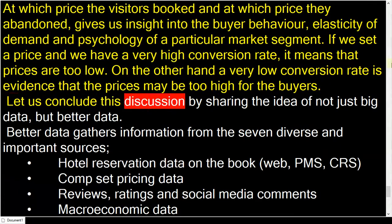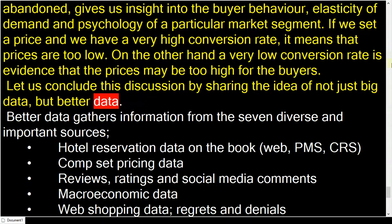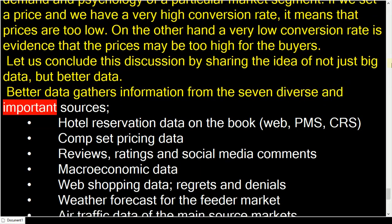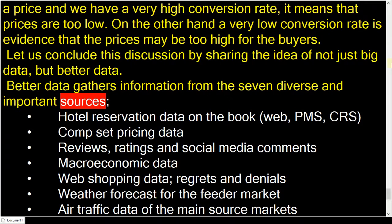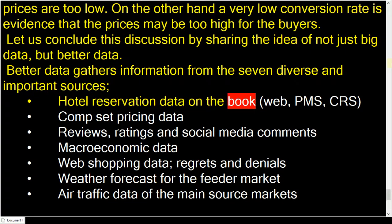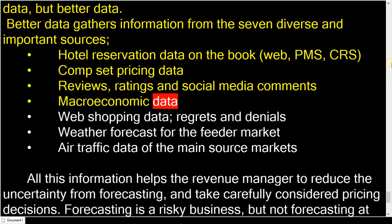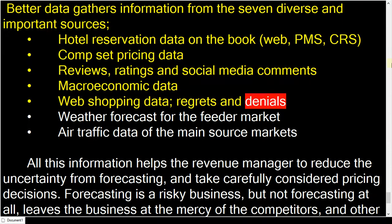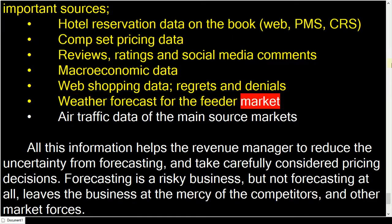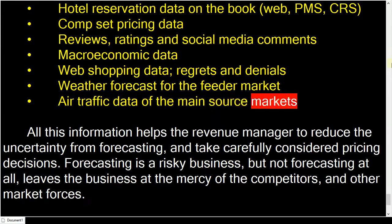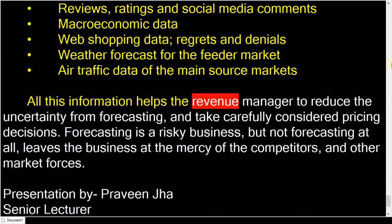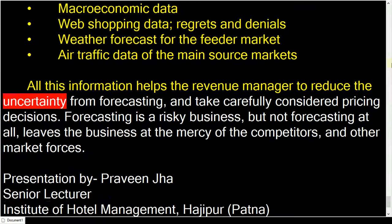Let us conclude by sharing the idea of not just big data, but better data. Better data gathers information from seven diverse and important sources: hotel reservation data on the books, comp set pricing data, reviews and ratings and social media comments, macroeconomic data, web shopping data including regrets and denials, weather forecast for the feeder market, and air traffic data of the main source markets. All this helps the revenue manager reduce uncertainty from forecasting and take carefully considered pricing decisions.